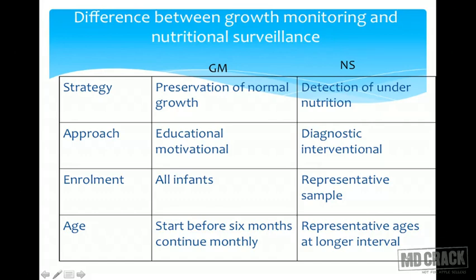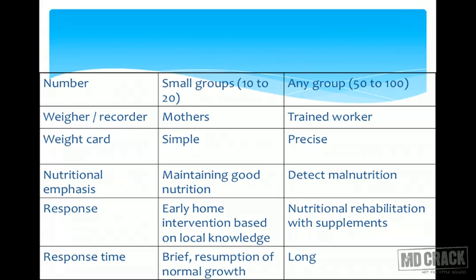In the comparison table, on the left is growth monitoring and on the right is nutritional surveillance. For growth monitoring: the strategy is prevention of faltering normal growth; the approach is educational and motivational; enrollment of all infants is done before six months of age; small groups are used; the mother records the weight; the weight card is simple; emphasis is on good nutrition; early home-based interventions are advocated; and response time is short with rapid resumption of growth.